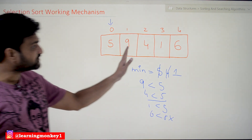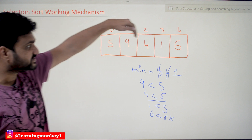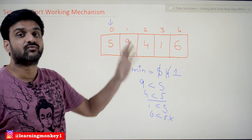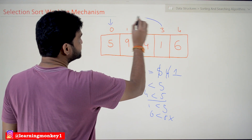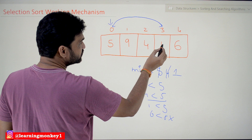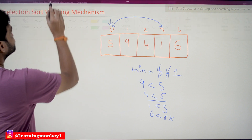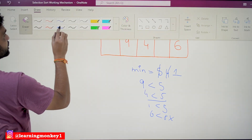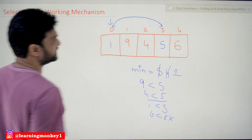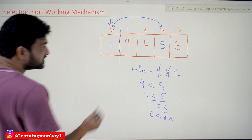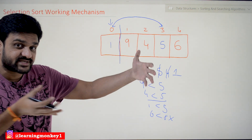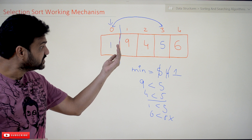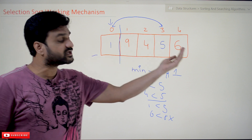After completing all the iterations, among these elements the smallest element is 1. Now we are going to swap this element with the element at the first position. So 5 and 1 will get swapped — 1 will come here and 5 will go there. Now visually — not physically — this array is divided into two halves: the sorted half on the left containing 1, and the unsorted half on the right.